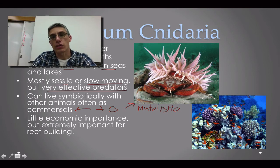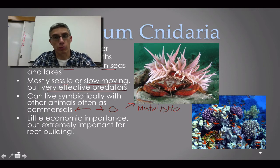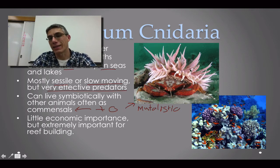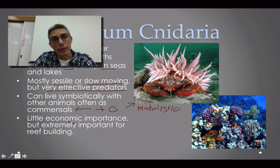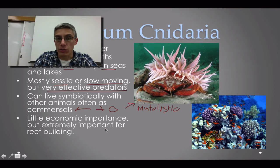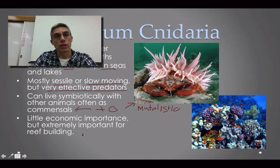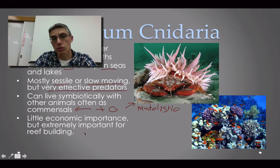The sea anemone on top may also benefit from the crab — perhaps the crab brings in food that the sea anemone can take advantage of. These animals are of little economic importance in most cases, but when it comes to reef building they become extremely important, especially for the overall health of the oceans and seas.